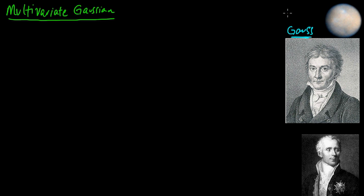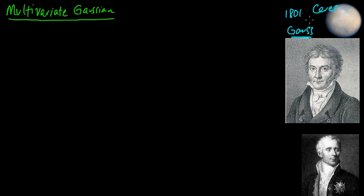He probably used it first in 1801. Astronomers had located Ceres — it's called a dwarf planet, it's an asteroid — and they were really excited because it was a new planet to them. They were tracking it, but then they lost track of it. Gauss developed the method of least squares, probably used a Gaussian distribution, and also developed the method of maximum likelihood to predict where Ceres would be in the sky. The astronomers pointed their telescopes where he said, and it was right on the money.